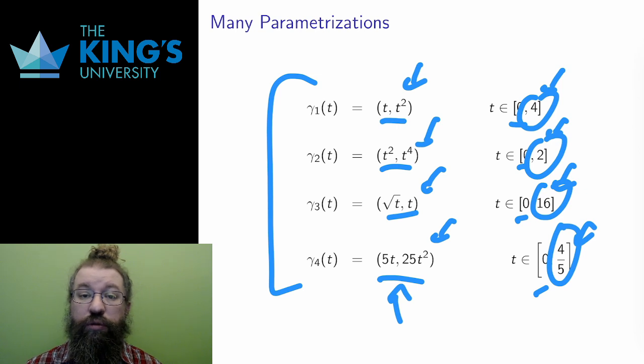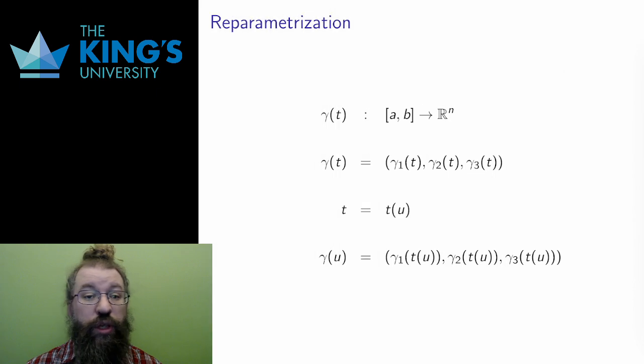Since there are different parametrizations to a curve, curves can be reparametrized. So what is a reparametrization? It is changing the rate of movement along the curve while not changing the shape. It is accomplished by a substitution.